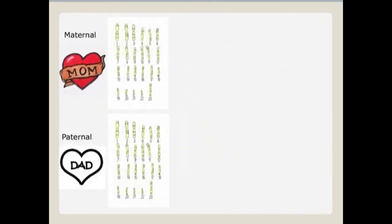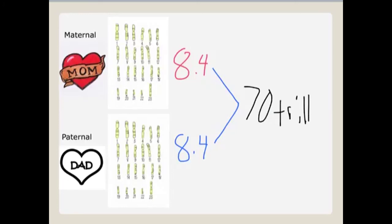That 8.4 million is only taking into consideration one parent. Now multiply this 8.4 million possibilities with the other parent, and you get about 70 trillion possibilities.